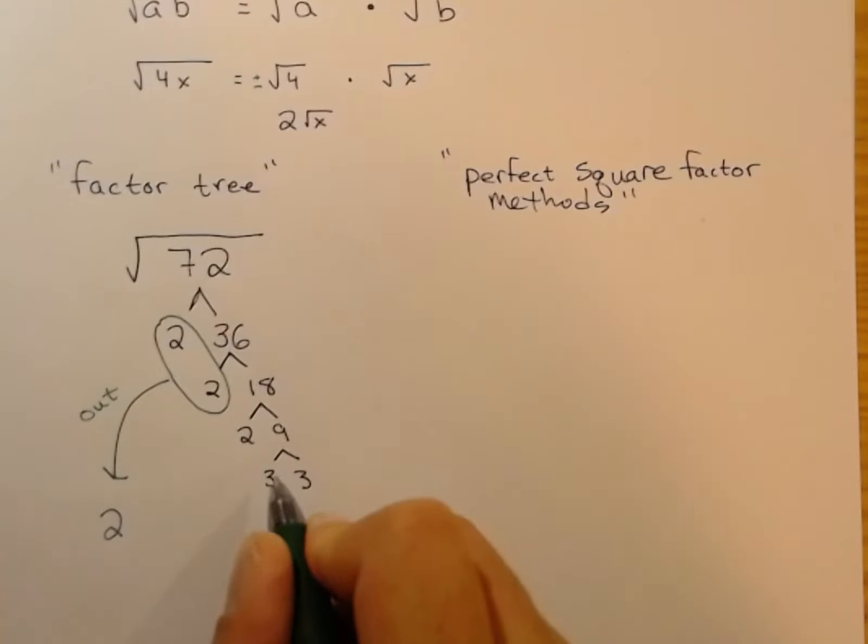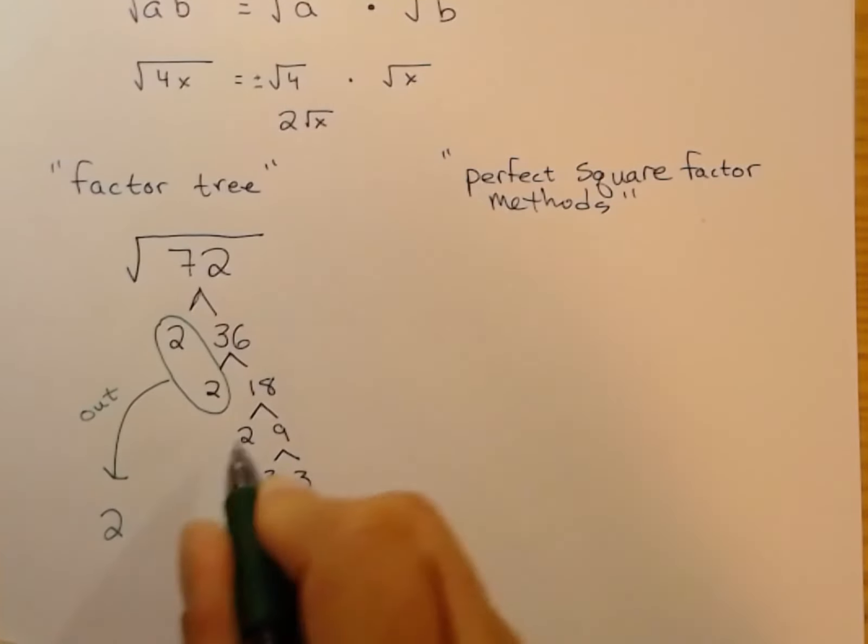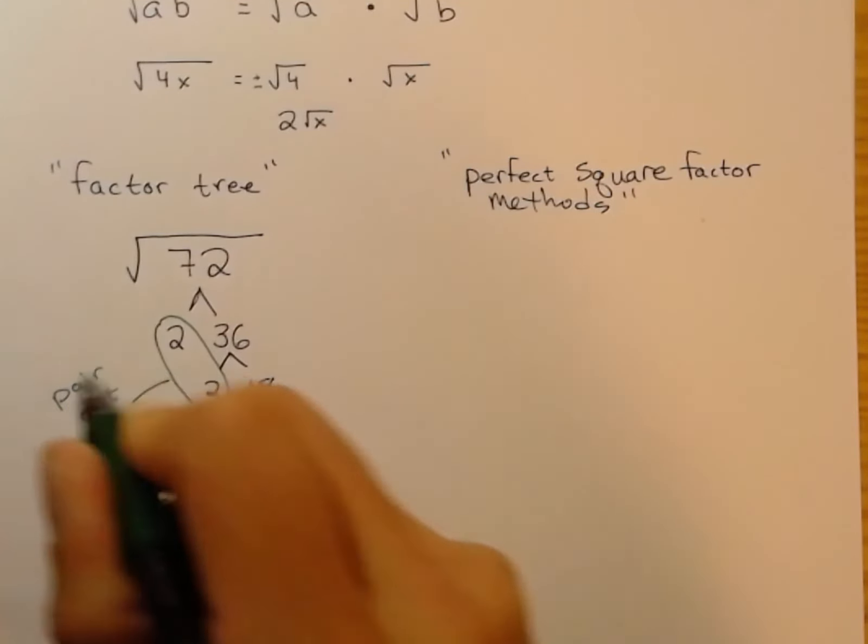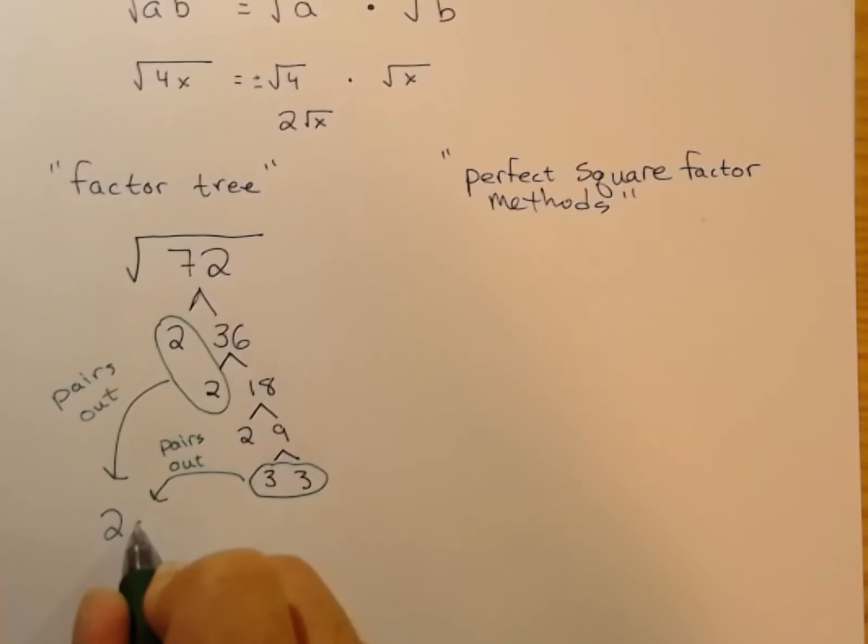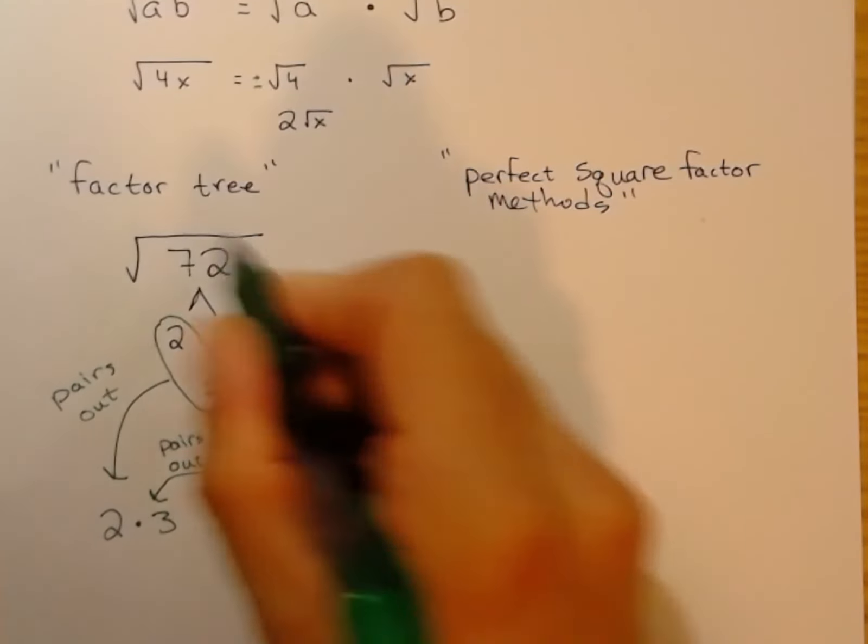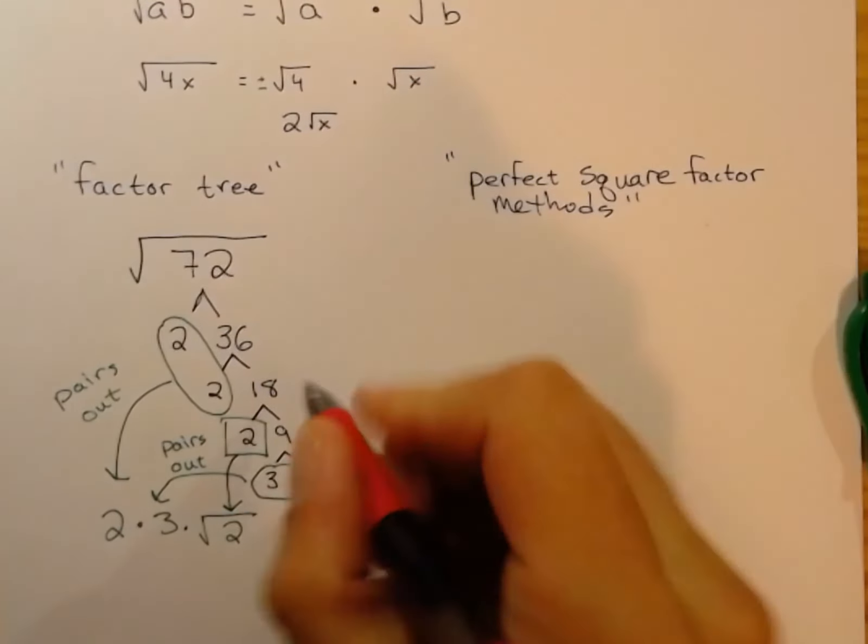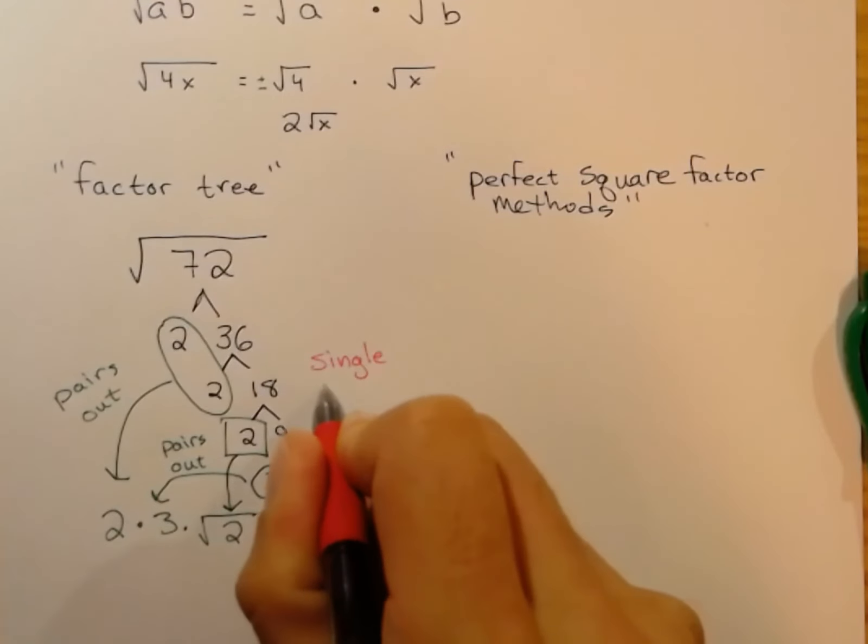Because what number times itself equals 72? So if you found a factor times itself, when you take it out of the radical, you're just going to take it out once. This being a multiplication, square root being a multiplication operation, all the factors that we take out, here's another pair, these guys come out. We're going to re-multiply everything. So a pair of twos comes out once. A pair of threes comes out once. And then this two does not have another partner to be paired up with. So any single factor that doesn't have a partner, that guy is going to stay in the radical.